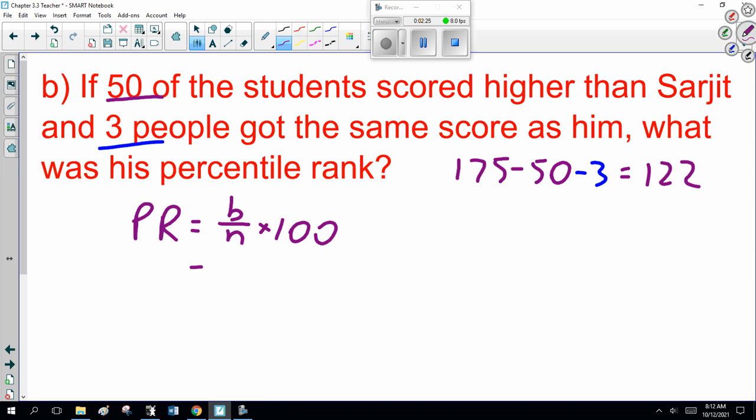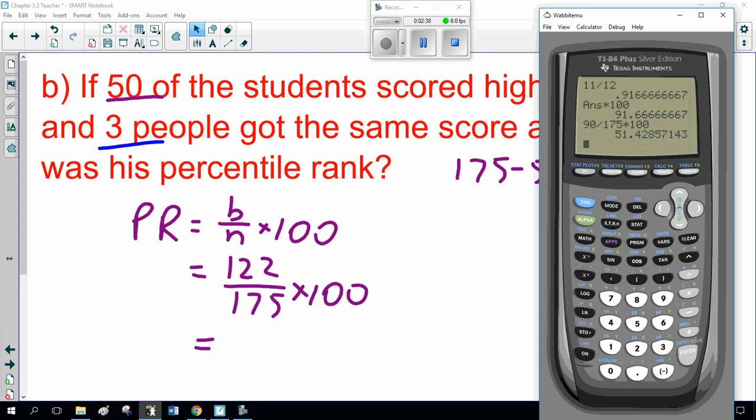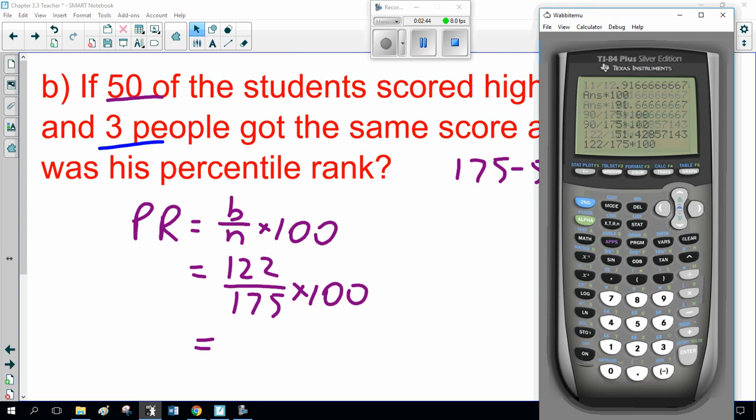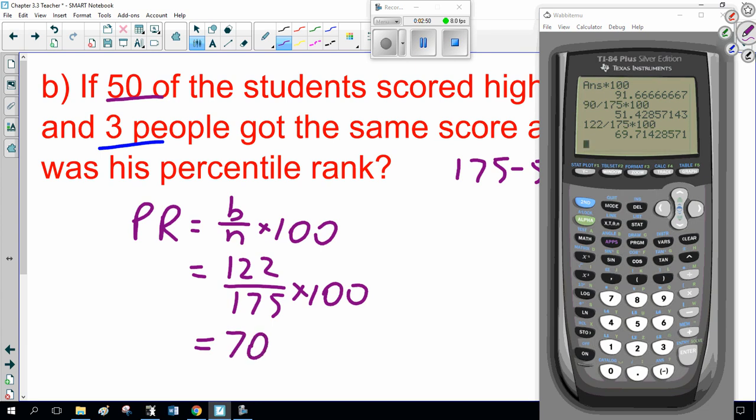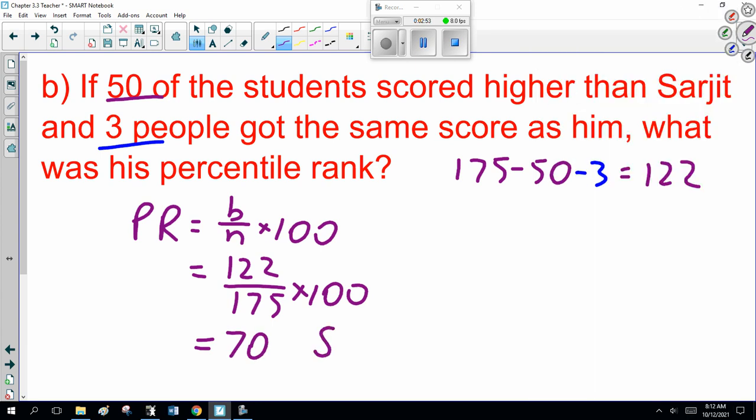So, it's 122 divided by 175 times 100. So, how well did Sarjit do? Well, 122 divided by 175 times 100, 70%. So, Sarjit scored better than 70% of the students.